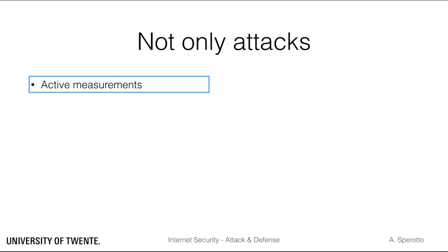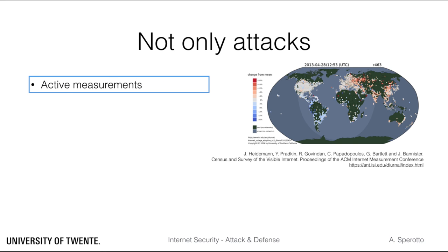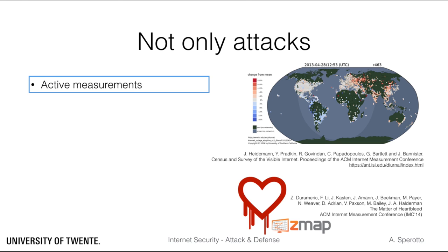For example, a project by, among others, the University of Southern California uses ping sweeps to map which parts of the IPv4 address space are in use. Researchers at the University of Michigan have developed ZMAP, a tool that allows efficient internet-wide scans used for gathering information about several protocols. For example, they used it for studying the impact of the Heartbleed SSL vulnerability in 2014.